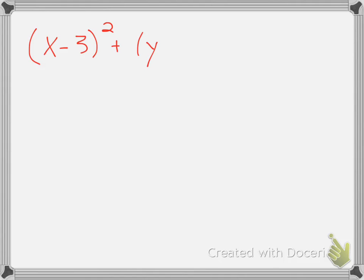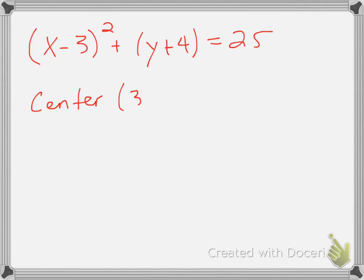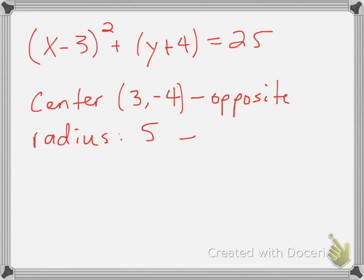Looking at this equation — x minus 3 squared plus y plus 4 squared equals 25 — we can find that our center is (3, -4) and our radius is 5. Remember, we take opposite signs from the equation, so the minus 3 becomes 3, the plus 4 becomes negative 4, and then we take the square root of 25 to get 5. That's the basic information for a circle.